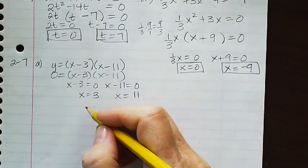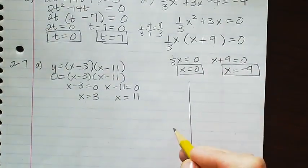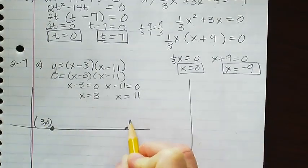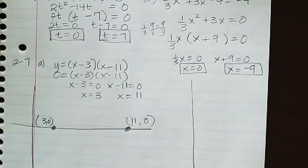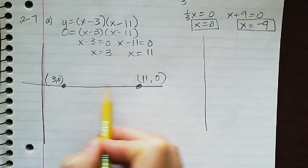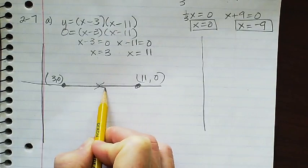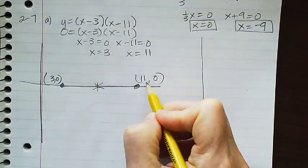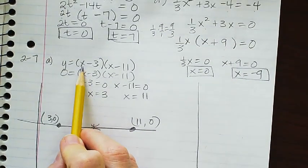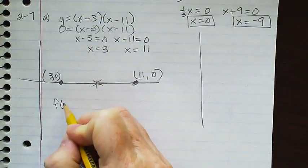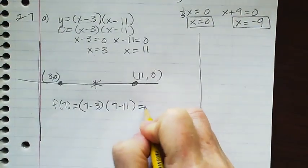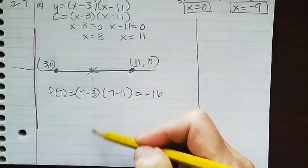Those are my two x-intercepts. The vertex is right in between because the parabola is symmetrical. From 3 to 11 is a distance of 8, and half of 8 is 4. So 3 plus 4 is 7 and 11 minus 4 is 7 — the x-coordinate of the vertex is 7. Substituting 7 in: (7 minus 3)(7 minus 11) = 4 times negative 4 = negative 16. So the vertex is at (7, negative 16).